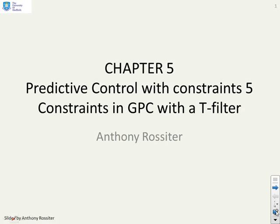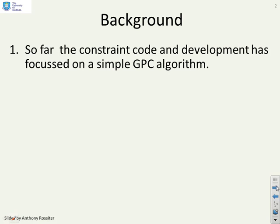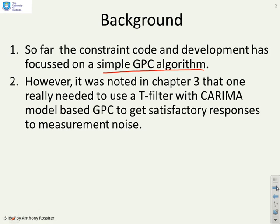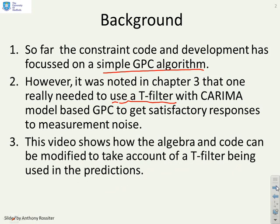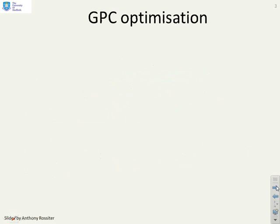This video looks at how you would introduce constraints when doing GPC with a T-filter. The constraint code developed in the previous video was focused on a simple GPC algorithm. However, we noted in Chapter 3 that in many cases you might want to use a T-filter if you had a ARIMA-based GPC algorithm, in order to get satisfactory responses when you have measurement noise. This video will look at how the algebra and code are modified to take account of a T-filter being used in the predictions.